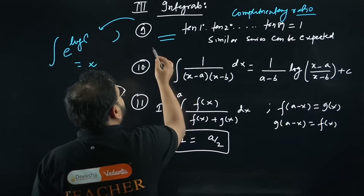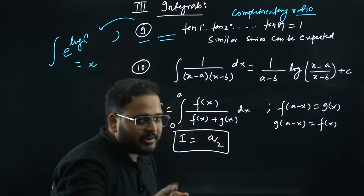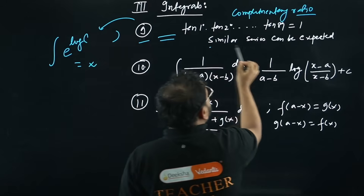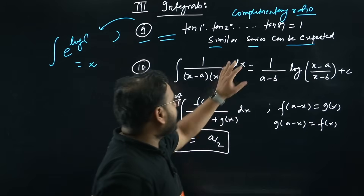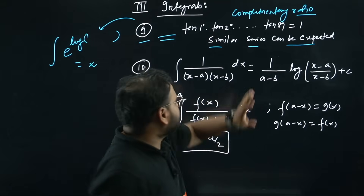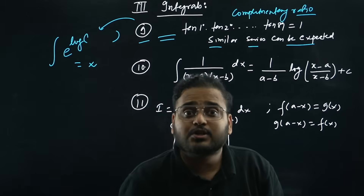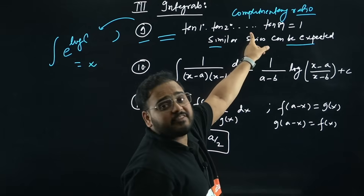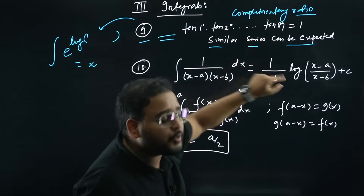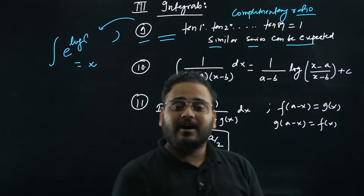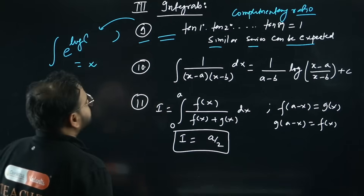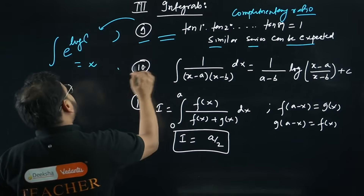Trick 9: This series trick using complementary ratios and special angles can be used in differentiation, relations and functions, and similar series questions. When you see a series, look for when terms become 1 or 0 — for example, tan 45° = 1, and cos 90° = 0. Check for complementary pairs and special angle values.